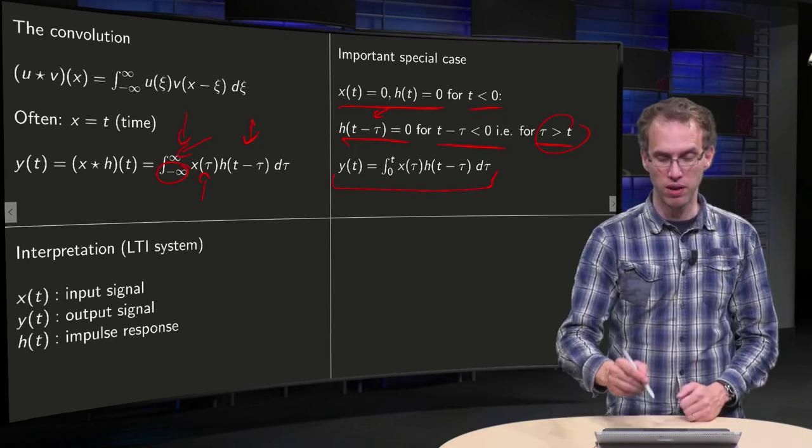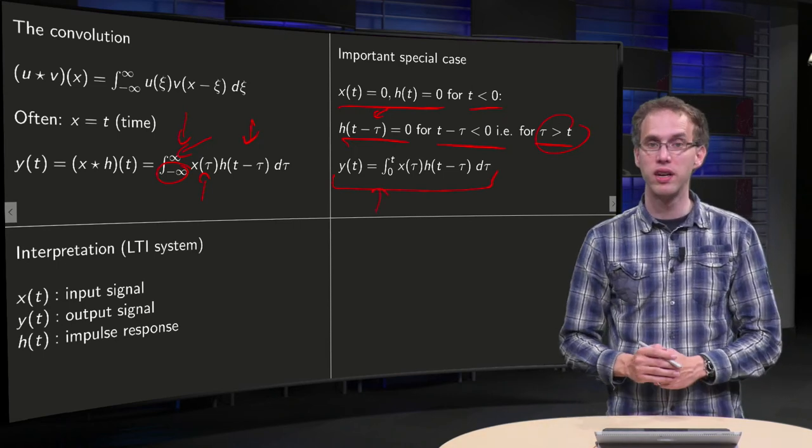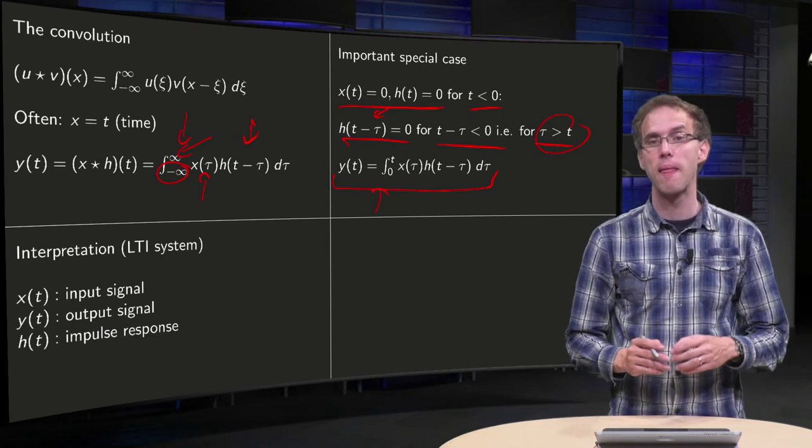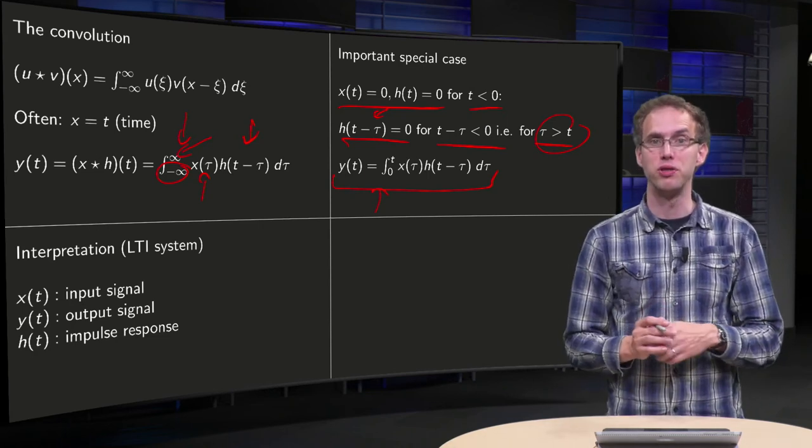So then you have this formula over here, y of t equals now integral from zero to t, x of tau h of t minus tau d tau. That's the formula for the convolution in this case,